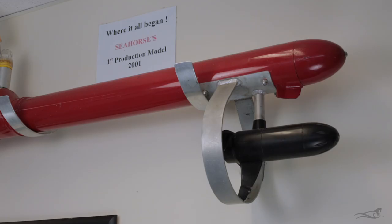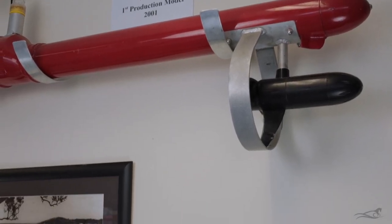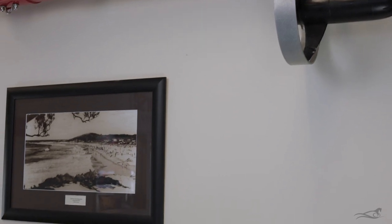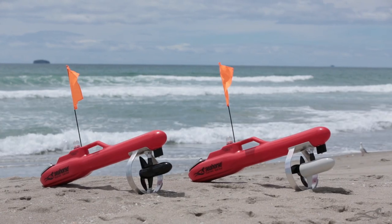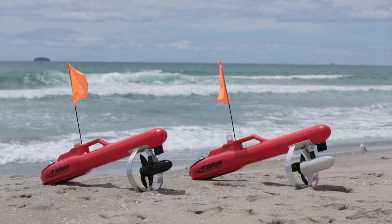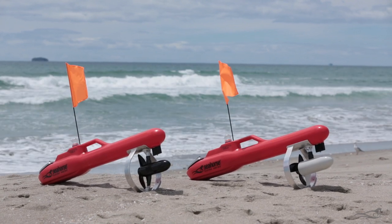The Standard Seahorse Kontiki started life with the 30lb thrust motor in 2001, and the more powerful 46lb thrust motor was introduced in 2004 to meet the challenges of fishing on the challenging west coast beaches.